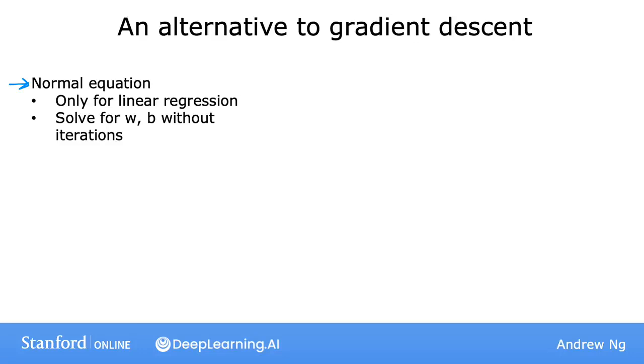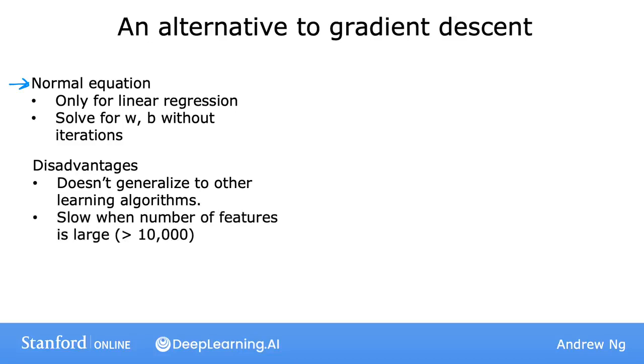Called the normal equation method, it turns out to be possible to use an advanced linear algebra library to just solve for w and b all in one go, without iterations. Some disadvantages of the normal equation method are: First, unlike gradient descent, this does not generalize to other learning algorithms, such as the logistic regression algorithm that you learn about next week, or the neural networks or other algorithms you see later in this specialization. The normal equation method is also quite slow if the number of features n is large.